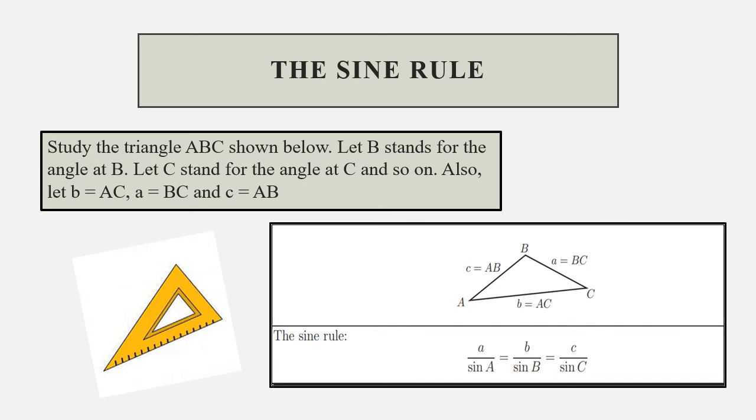First is the sine rule. Study the triangle ABC shown below. Let B stand for the angle at B, let C stand for the angle at C, and so on. Also, let b = AC, a = BC, and c = AB. Take a look at the figure below. The sine rule is: a/sin A = b/sin B = c/sin C.